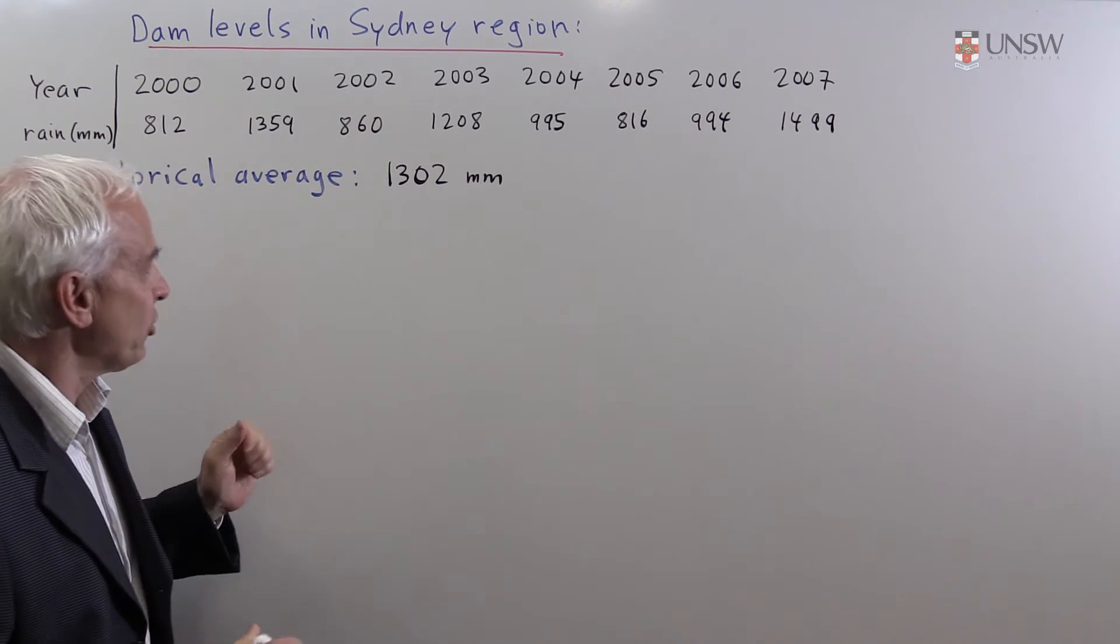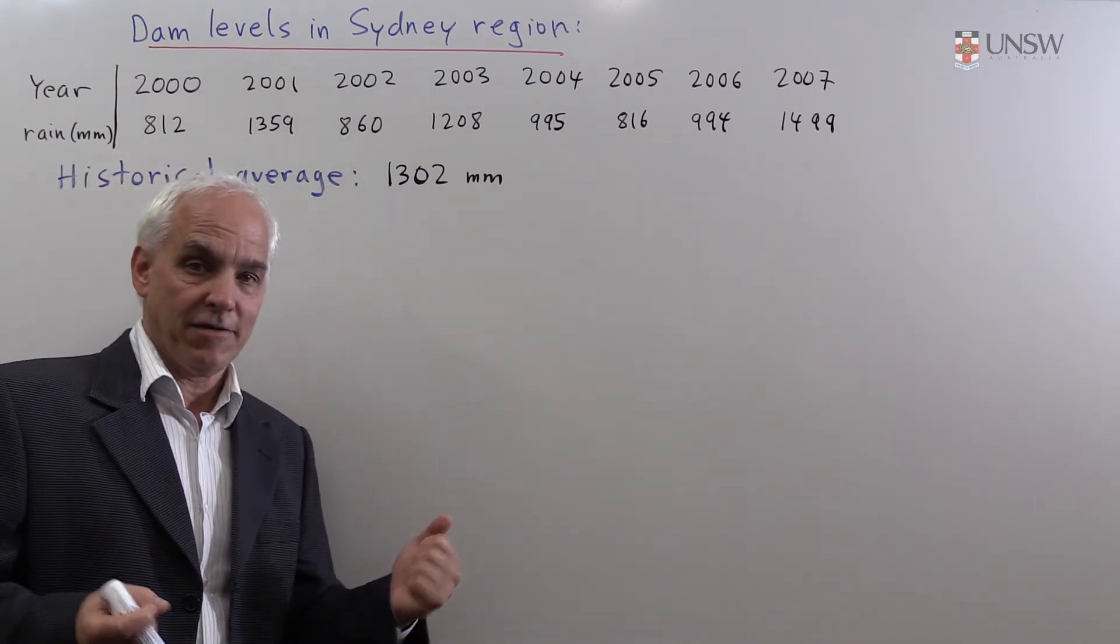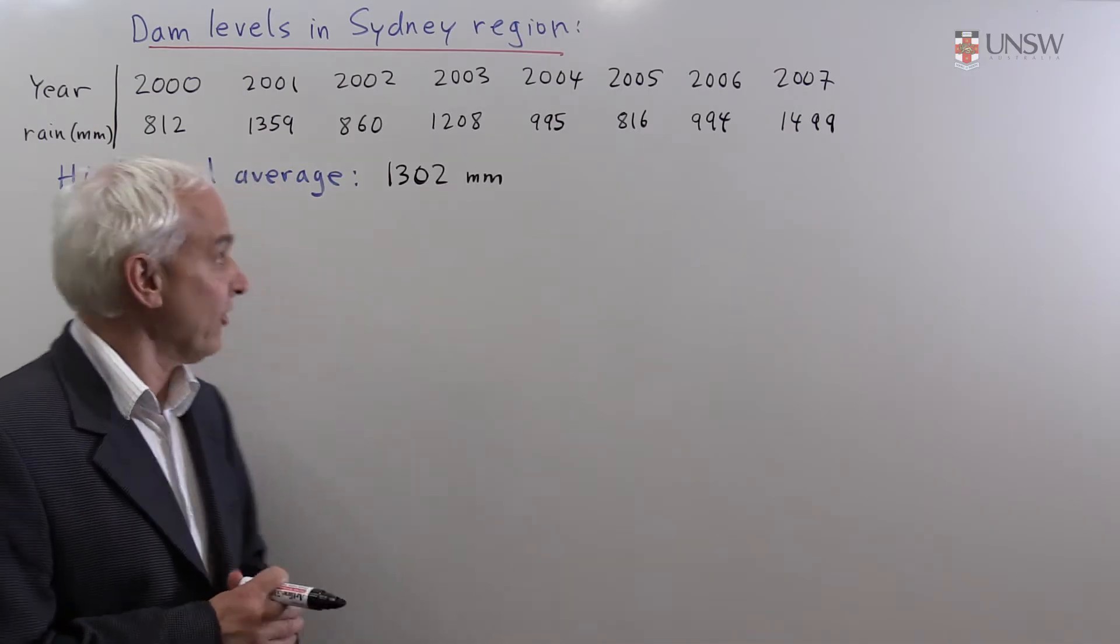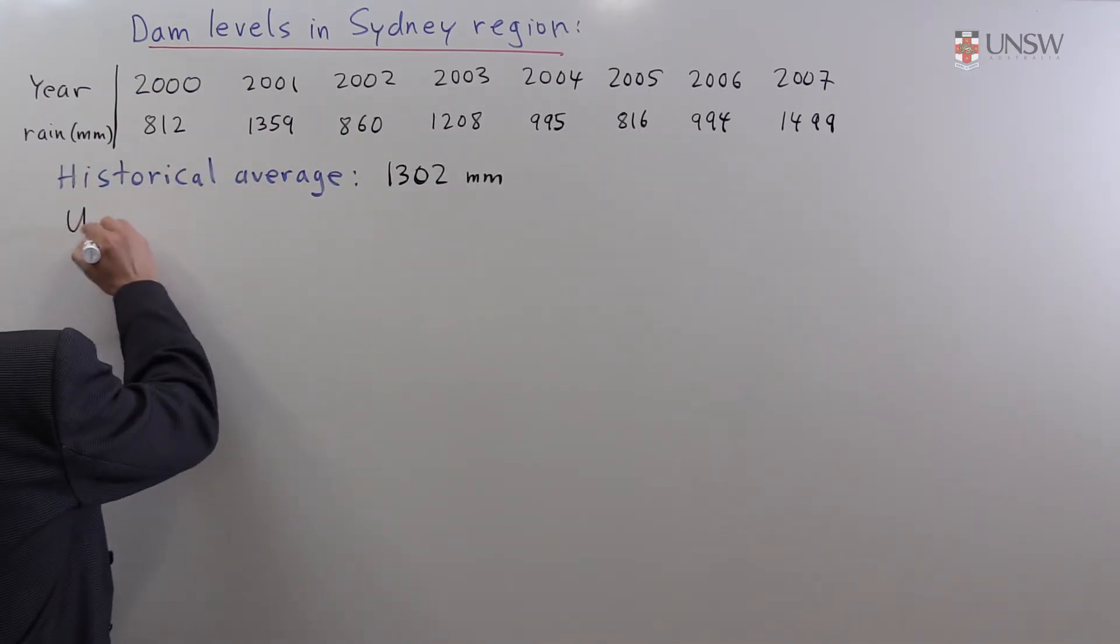So in order to determine this, we're going to use what's called a sign test from elementary probability and statistics.